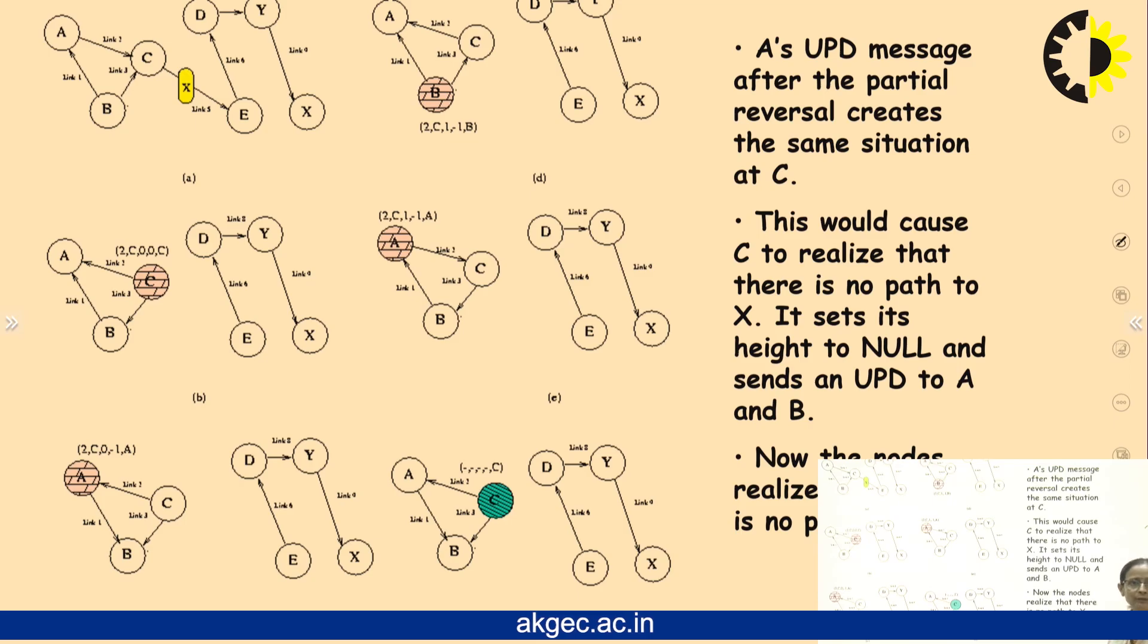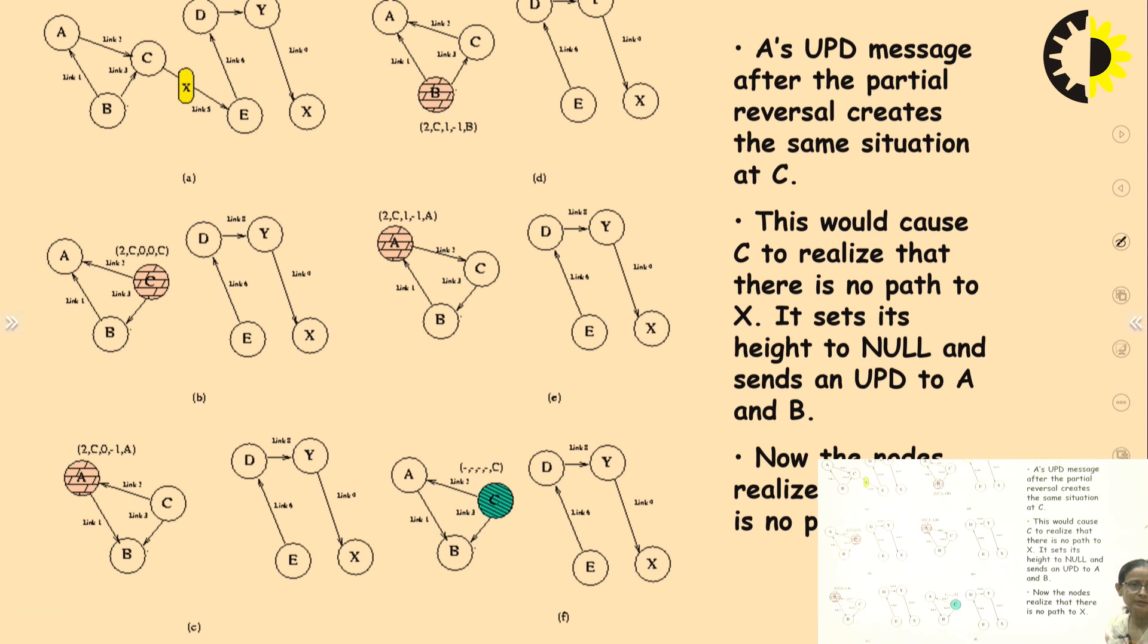A's UPD message after the partial reversal creates the same situation at C. This would cause C to realize that there is no path to X. It sets its height to null and sends a UPD to A and B. Now the nodes realize there is no path to X. That is how when two subsets are created in the network, the source comes to know that it has no way now to be connected with the destination node.